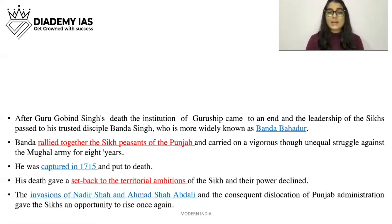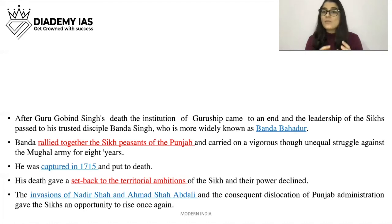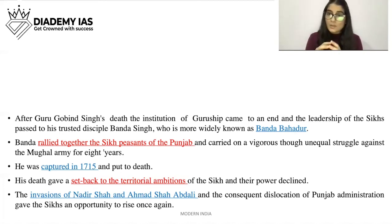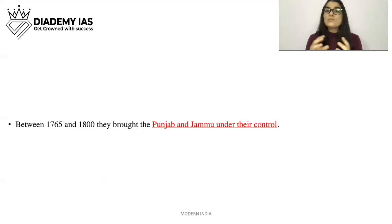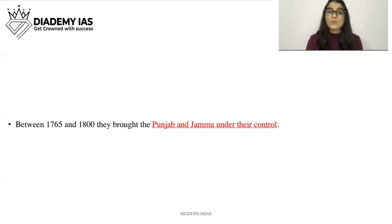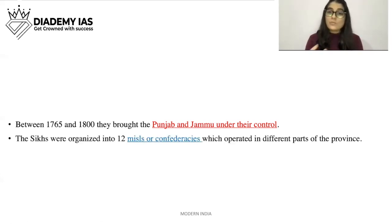The invasions of Nadir Shah and Ahmed Shah Abdali and the consequent dislocation of Punjab administration gave the Sikhs an opportunity to rise once again. When these foreign invaders came, the Mughal Empire's attention was diverted, and the Sikhs seized this opportunity to rebuild their hold. Between 1765 and 1800, they brought Punjab and Jammu under their control, taking advantage of the turmoil and chaos caused by the invasions.